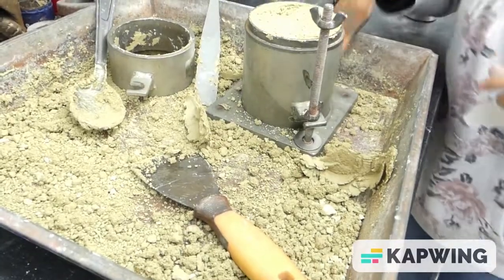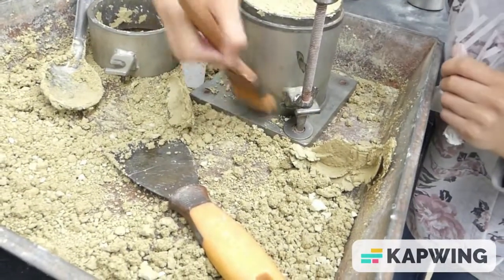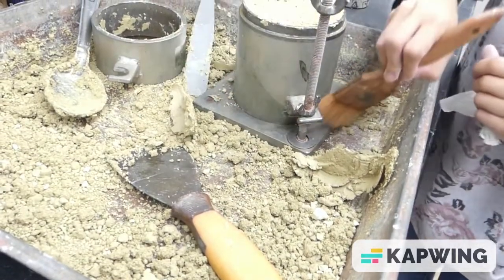You will then need to brush off any soil that may have fallen on the mold. Once it is cleaned off, you will weigh the mold again and make note of it.